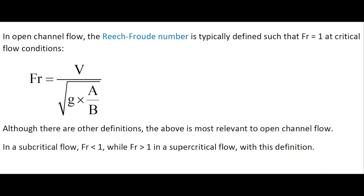In open channel flow, the Froude number is typically defined such that the Froude number equals unity at critical flow condition. Although there are other definitions, the one shown here is the most relevant to open channel flow. In a subcritical flow, the Froude number is less than unity. In a supercritical flow, the Froude number is greater than unity.